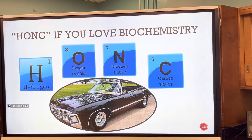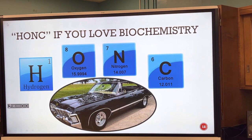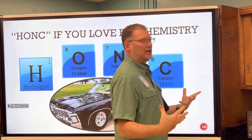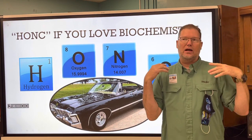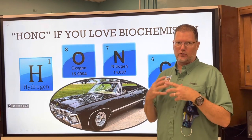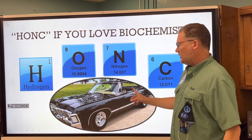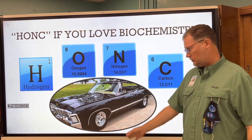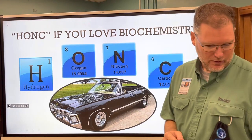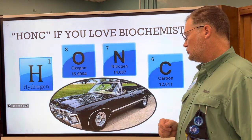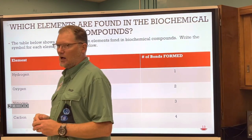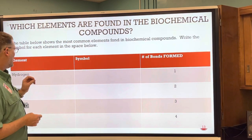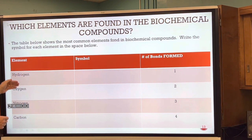HONK — if you love biochemistry — refers to the four organic atoms: hydrogen, oxygen, nitrogen, carbon — elements from the periodic table of elements. The periodic table is in the back of the room as a reference. The number of bonds each element forms is extremely important in determining what kind of organic chemicals they can make. Carbon is the most versatile — carbon can make four bonds, so it has far more combinations than hydrogen or oxygen.